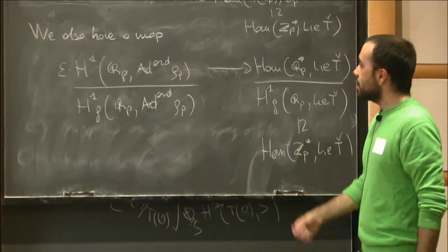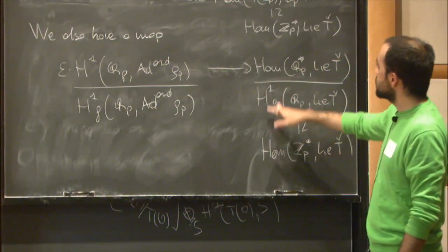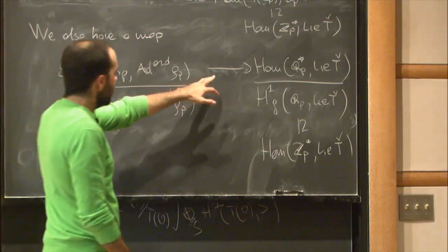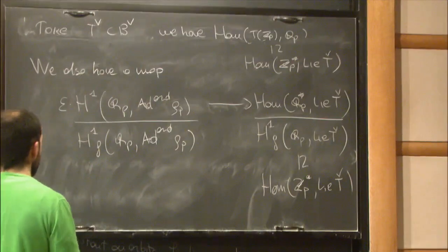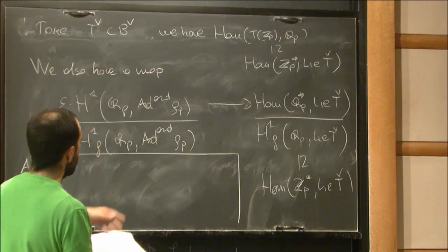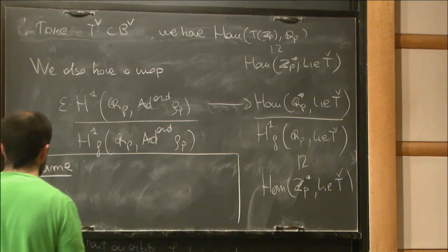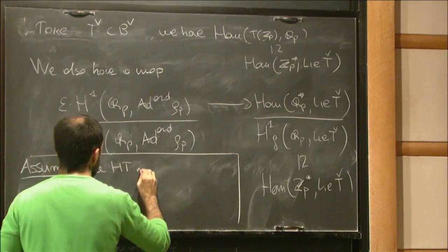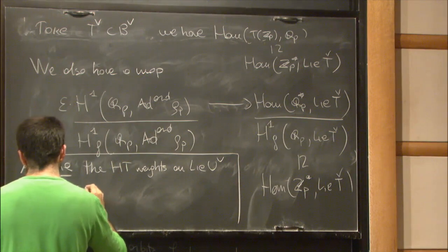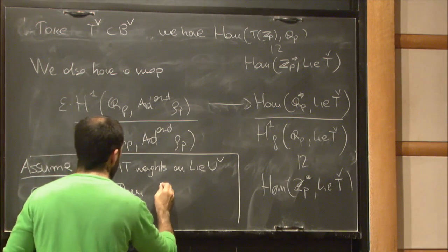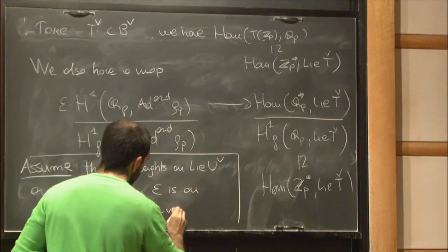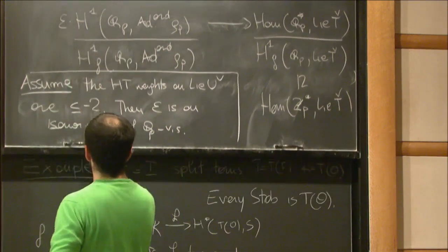By picking a splitting of Q_p^× as Z_p^× × Z, this identification is explicit. Now, we're looking for maps out of Hom(Z_p^×, Lie T-check) — my degree one Hecke operators — and we're looking for maps out of it. To invert this arrow, the easiest way is to assume it's an isomorphism. This boils down to some condition on the Hodge-Tate weights for the Lie algebra of the unipotent of B-check. We can assume that the Hodge-Tate weights on Lie u-check are all ≤ −2, and then ε is an isomorphism of Q_p-vector spaces.